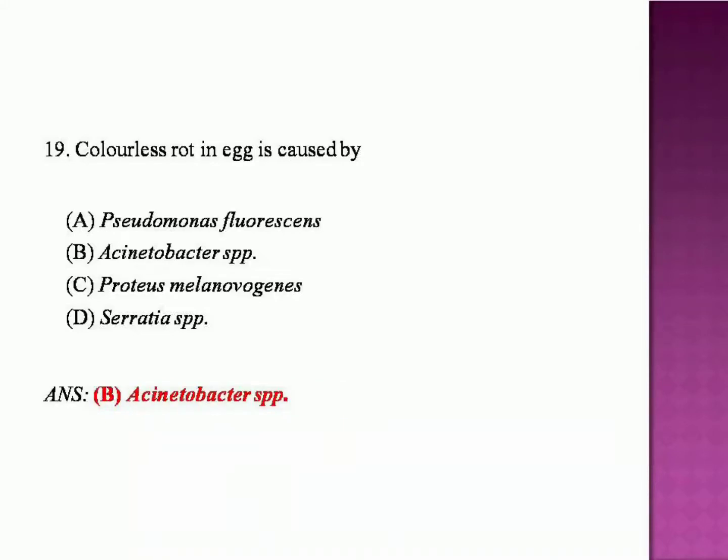Colorless rot in egg is caused by: Pseudomonas fluorescens, Acinetobacter species, Proteus melanogenes, or Serratia species? The answer is Acinetobacter species.